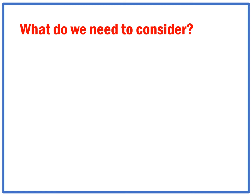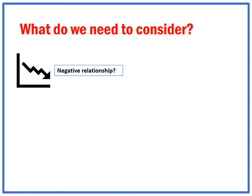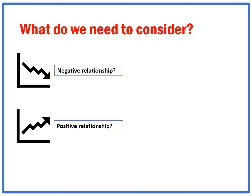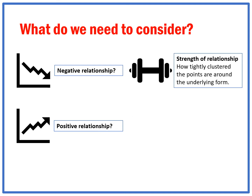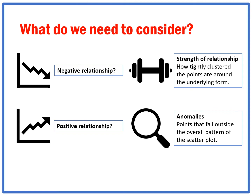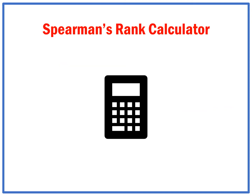The various things we need to consider are whether the data shows a negative or positive relationship, the strength of that relationship, and whether there are any anomalies. The Spearman's rank calculates it, and I can show this in Excel — I've put a link to it in the comments, so please follow along and have a go.